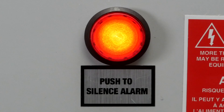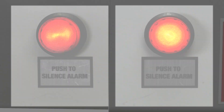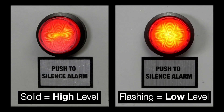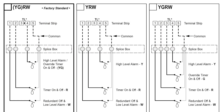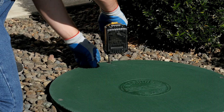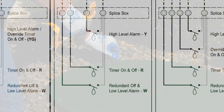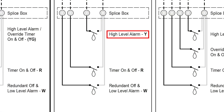If the alarm does occur, the push-to-silence button on the face of the panel will illuminate. For all MVP panels, the light will flash for a low level alarm and remain solid for a high level alarm. For all electromechanical panels with the RO feature, there is no visual indicator to differentiate between the two alarms. You will need to remove the riser lid and visually inspect the level in the tank to determine if the alarm is a high level or low level alarm.